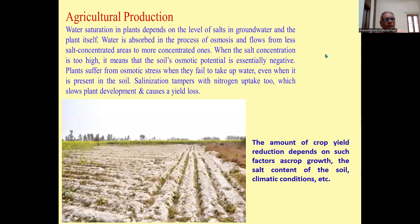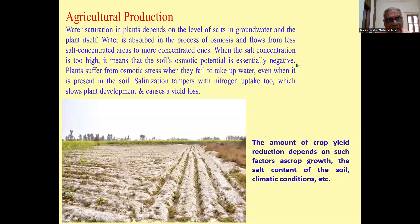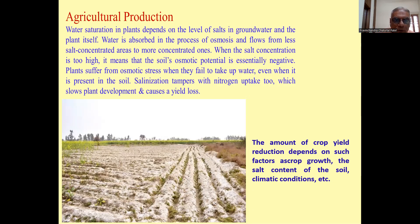Regarding agriculture production: water uptake in plants depends on the level of salt in groundwater and the plant itself. Water is absorbed by osmosis and flows from less concentrated areas to more concentrated ones. When the soil concentration is too high, the soil osmotic potential is essentially negative. Plants suffer from osmotic stress when they fail to take up water even when it is present in the soil.